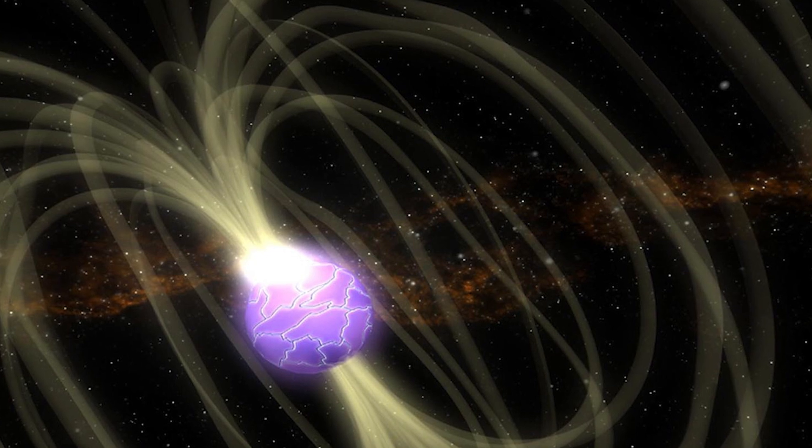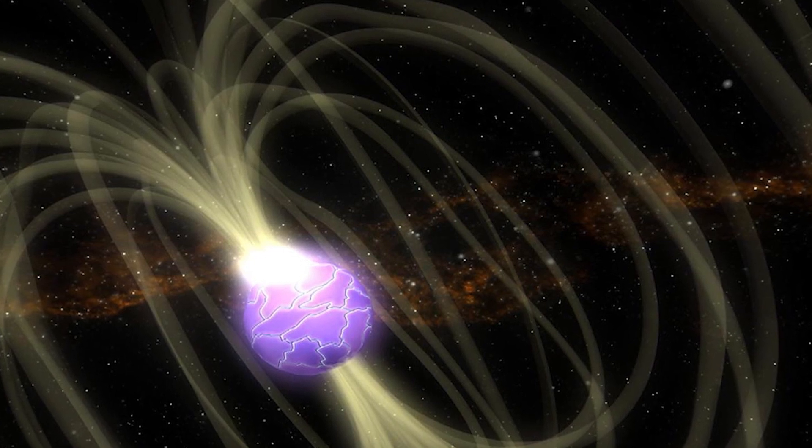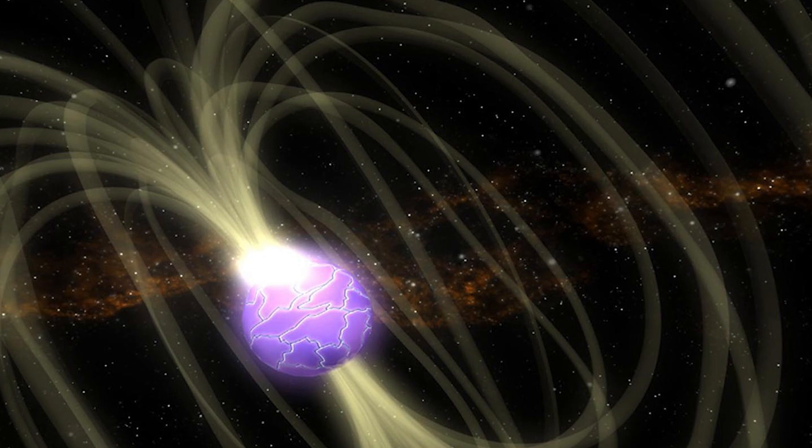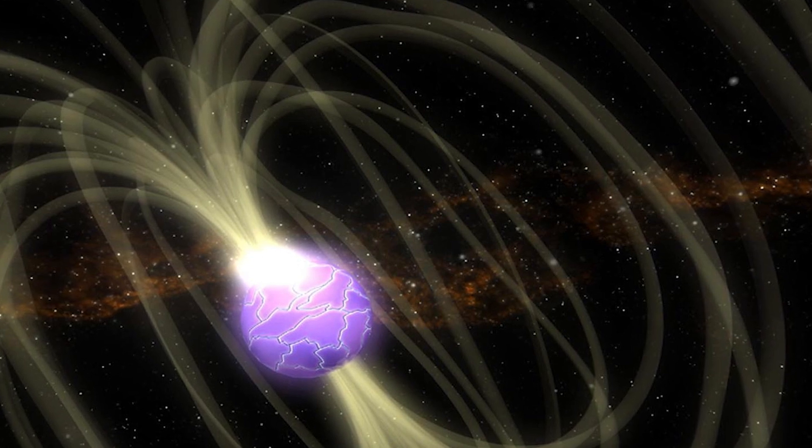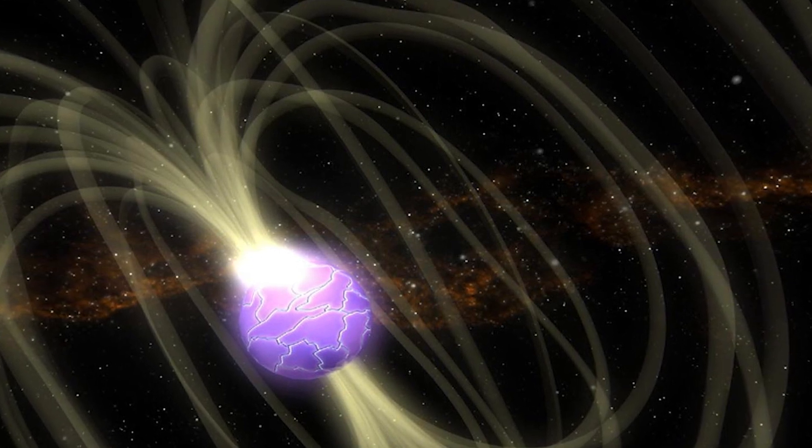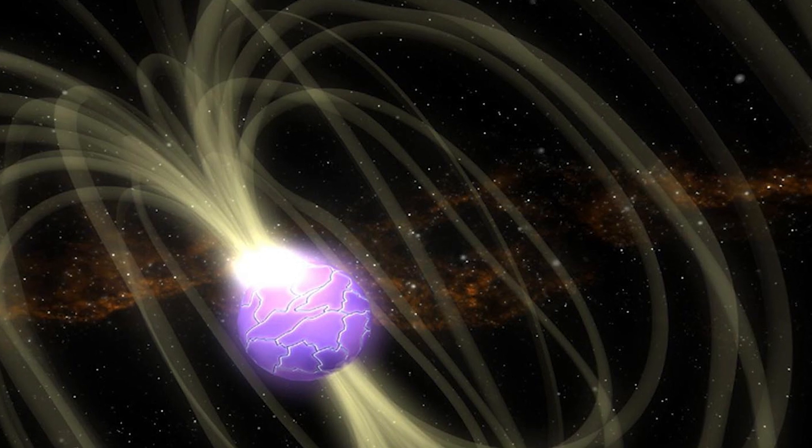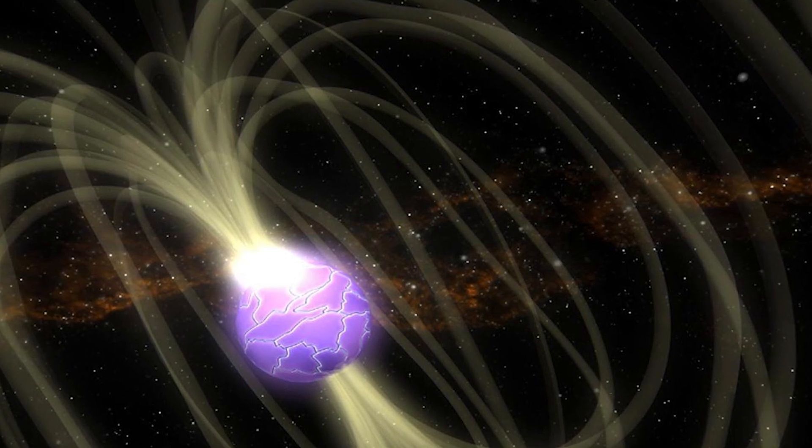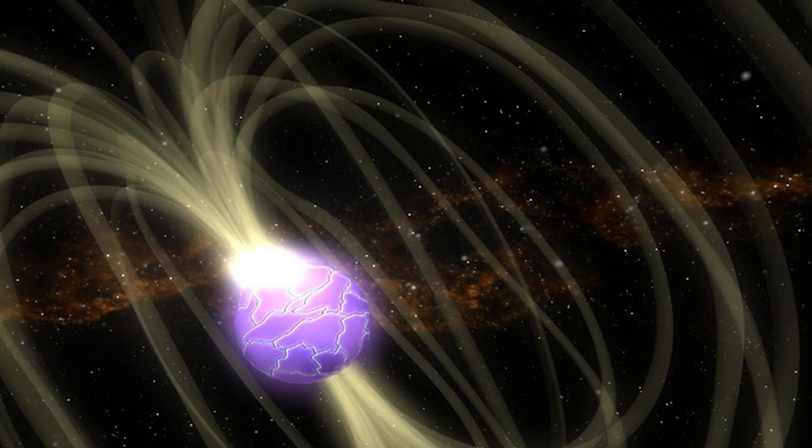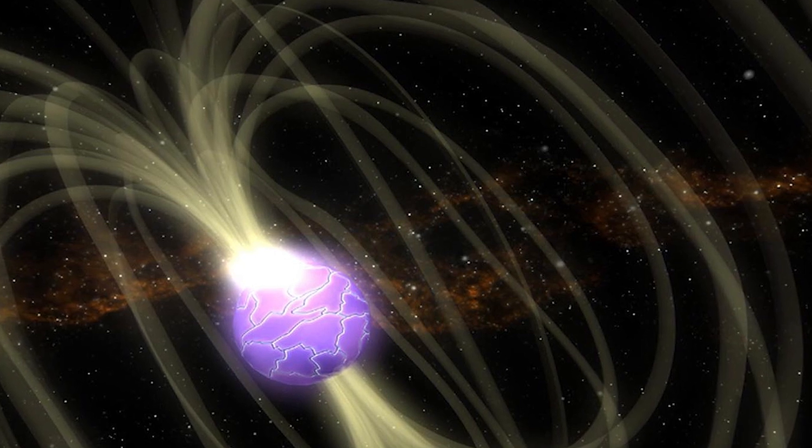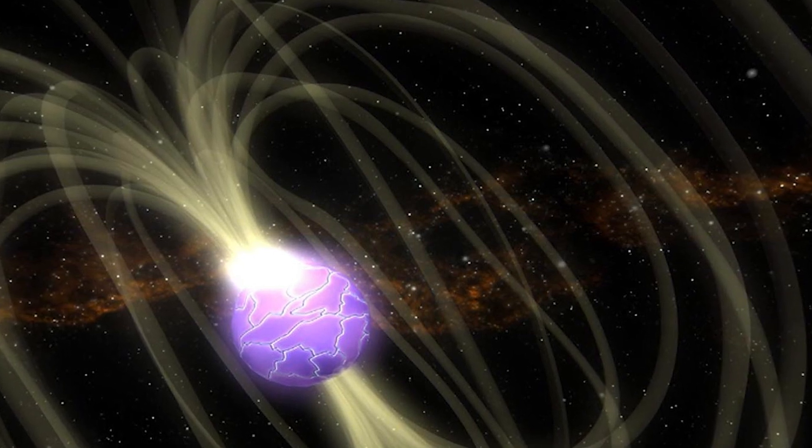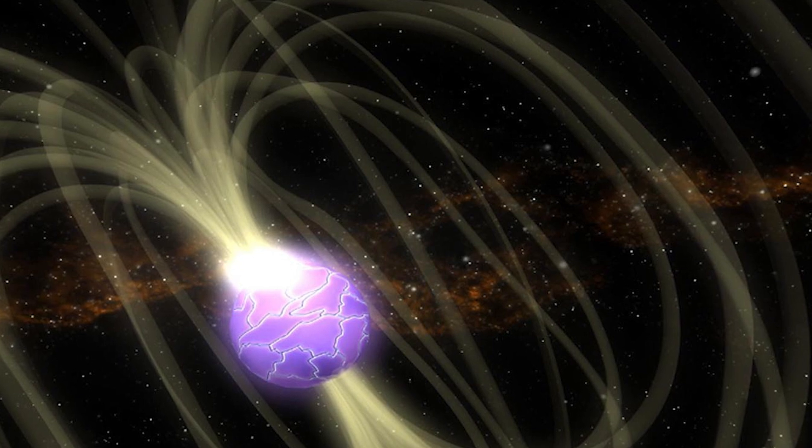Once the magnetic field dies down, the gamma-ray bursts and X-ray activity in general ends. Due to the age of the universe and short lifespan of magnetars, it is estimated there are at least 30 million inactive magnetars lingering in space. Once-vibrant gamma-rich stars, now quiet morsels of darkness.